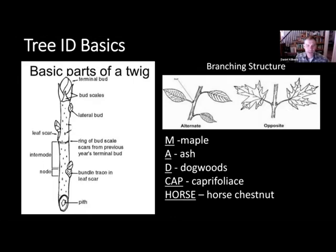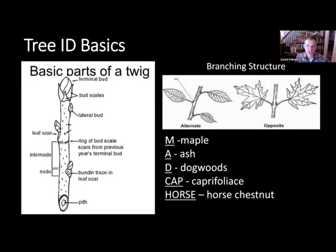The next thing we want to focus on is branching pattern or branching structure. Buds and leaves are arranged on a branch in a certain pattern. They're either opposite, which means they're located directly across from one another, or they're alternate, which means they're staggered along the twig. They never switch — it's always the same for each species. A trick to remember which trees are opposite is the mnemonic MADCap Horse: maple, ash, and dogwood; cap for the Caprifoliaceae family; and horse for horse chestnut, which isn't native to Vermont.